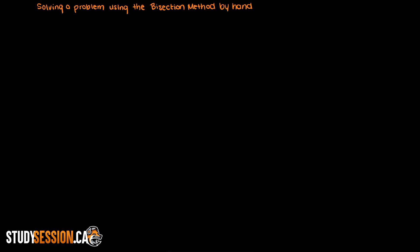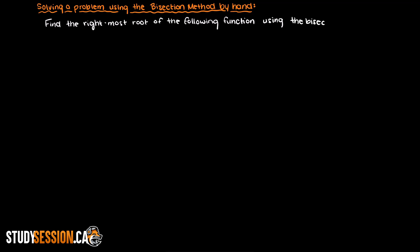Hey everyone, in this video we are going to walk through solving a problem using the bisection method by hand. Our problem states to find the rightmost root of the following function using the bisection method to an error level of 0.05. Our function here is 4x squared plus 3x minus 3.